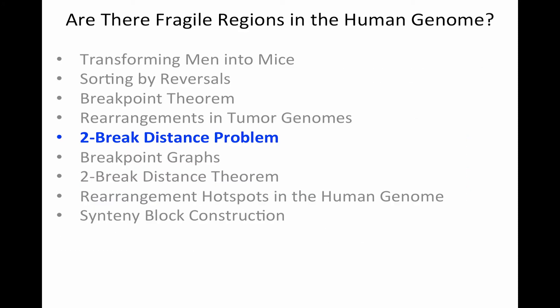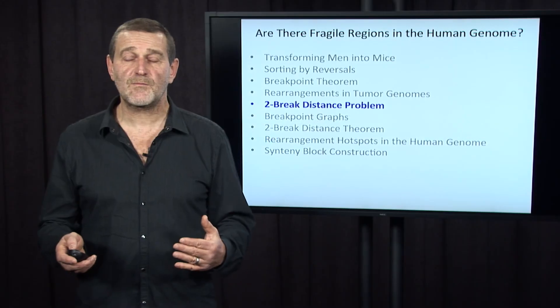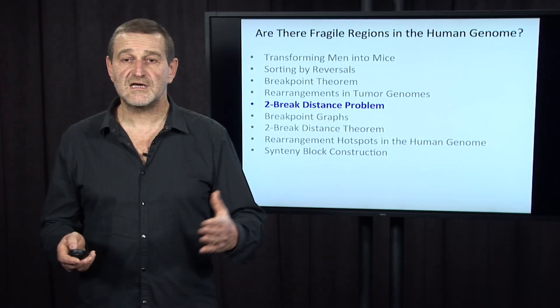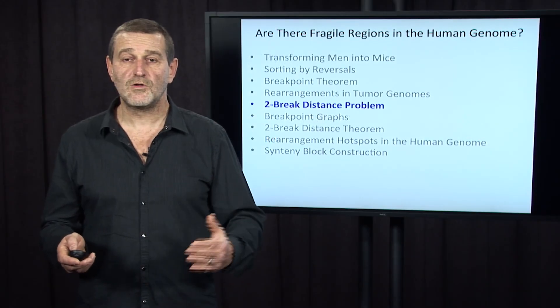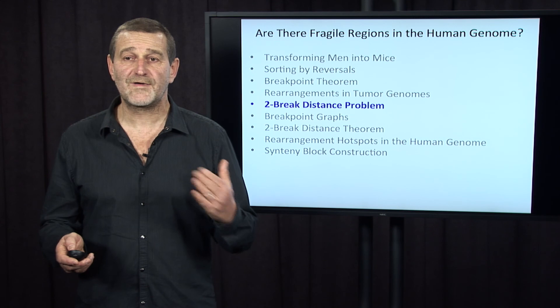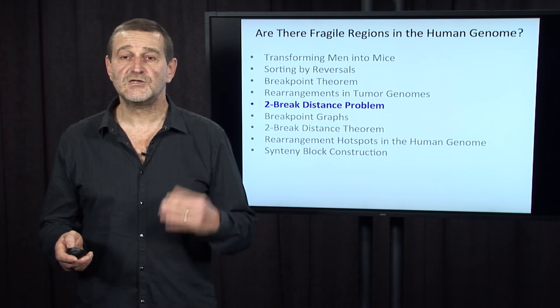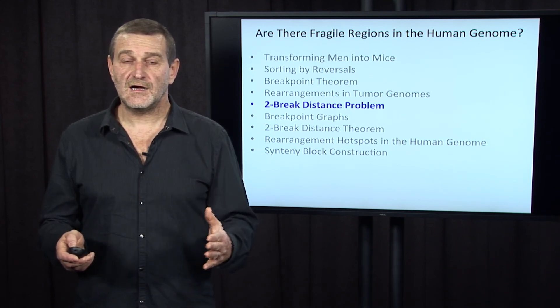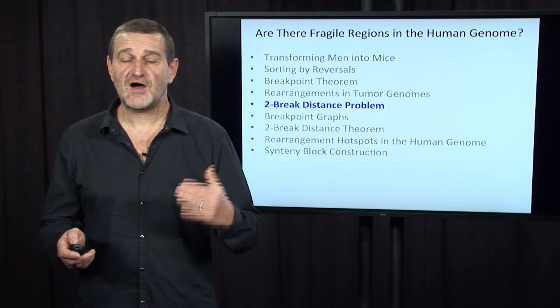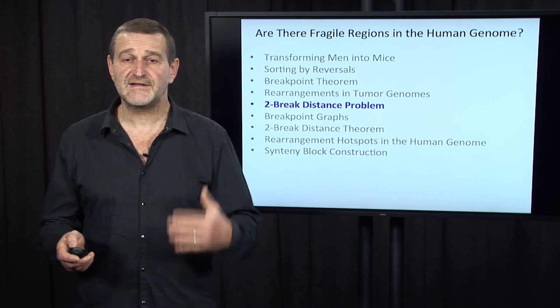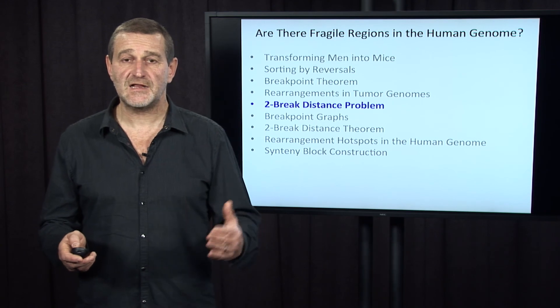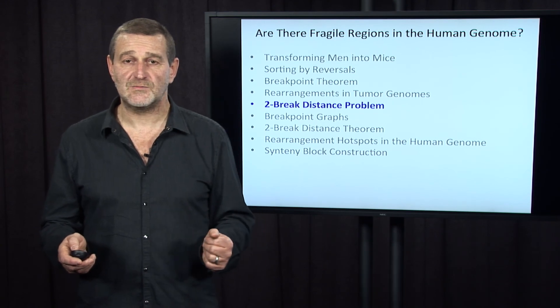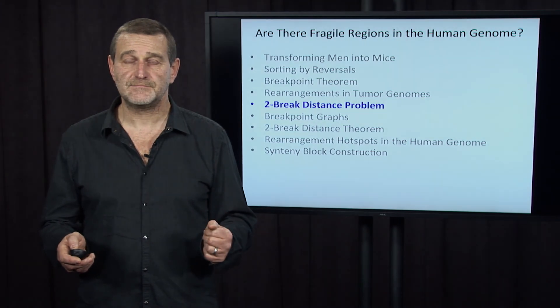And in the next section, we will look at the algorithmic problem called the two-break distance to address the question of how to find rearrangements in multichromosomal genomes.